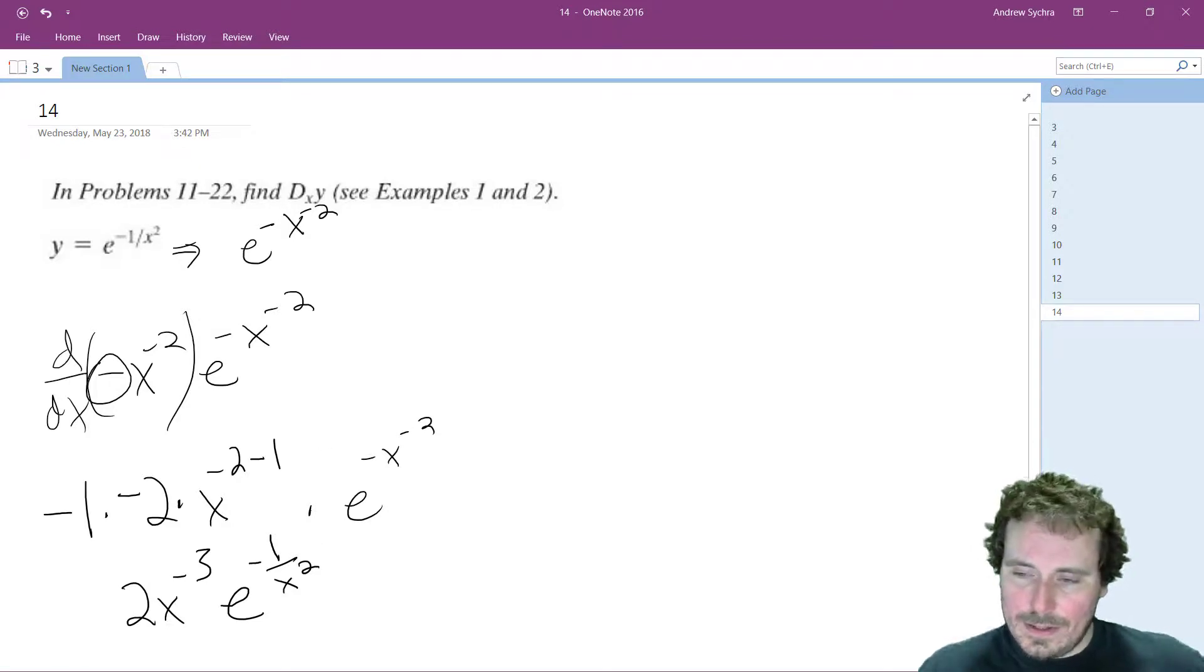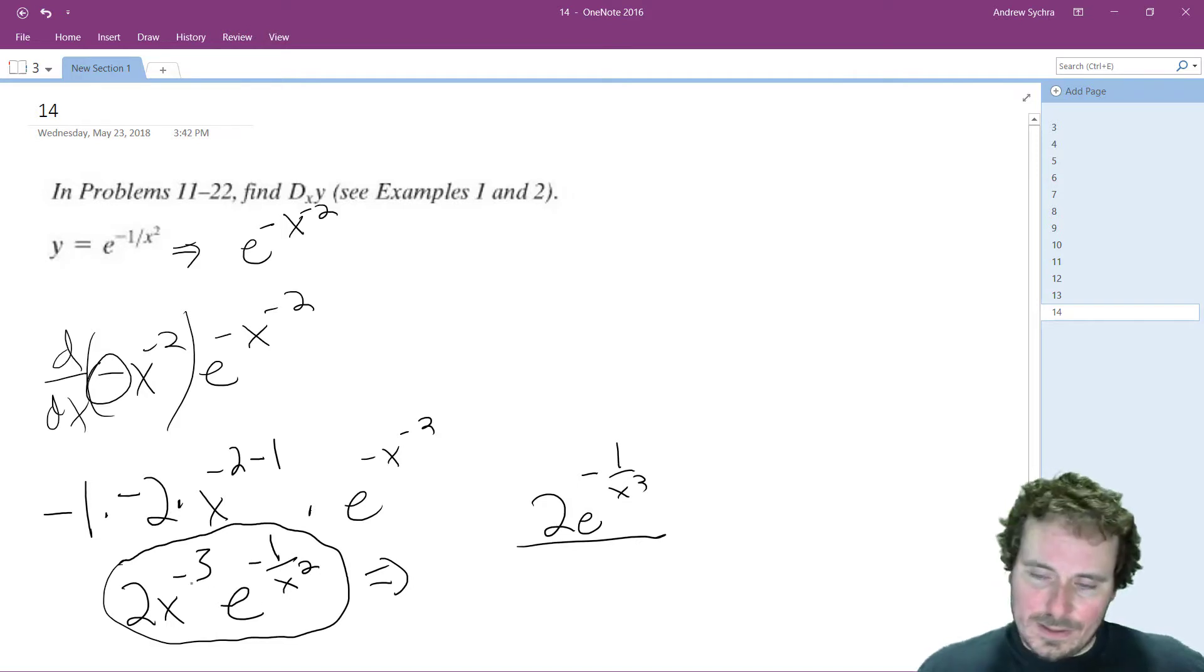So here's our solution. There's several different ways you can rewrite this. If you want you could rewrite it as 2 e raised to the negative 1 over x squared all over, and because it's x raised to the negative third, it could be x third on the bottom.